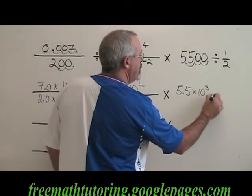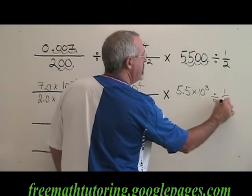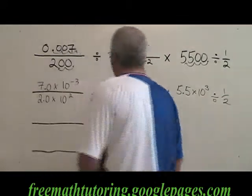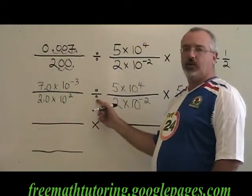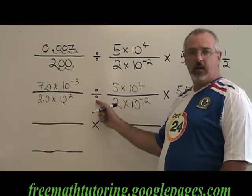And then I have my divided by 1 half. Now, the next thing to do is to deal with the fractions that are being divided. Turn them upside down and multiply instead.